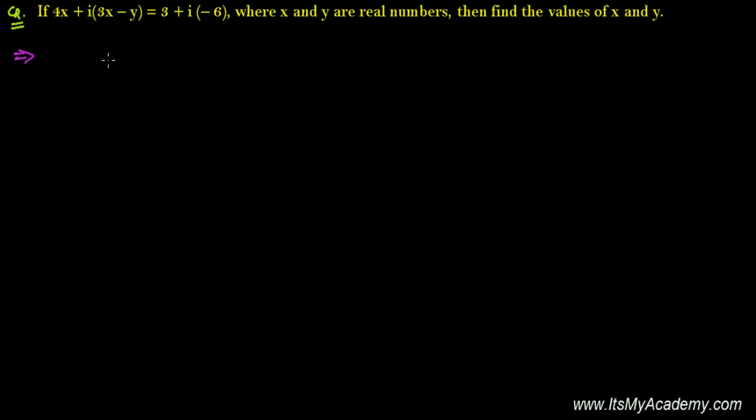If these two are equal, then their real parts as well as imaginary parts should be equal. Let me first write the given condition. The given is 4x plus i times (3x minus y) equals 3 plus i times minus 6.